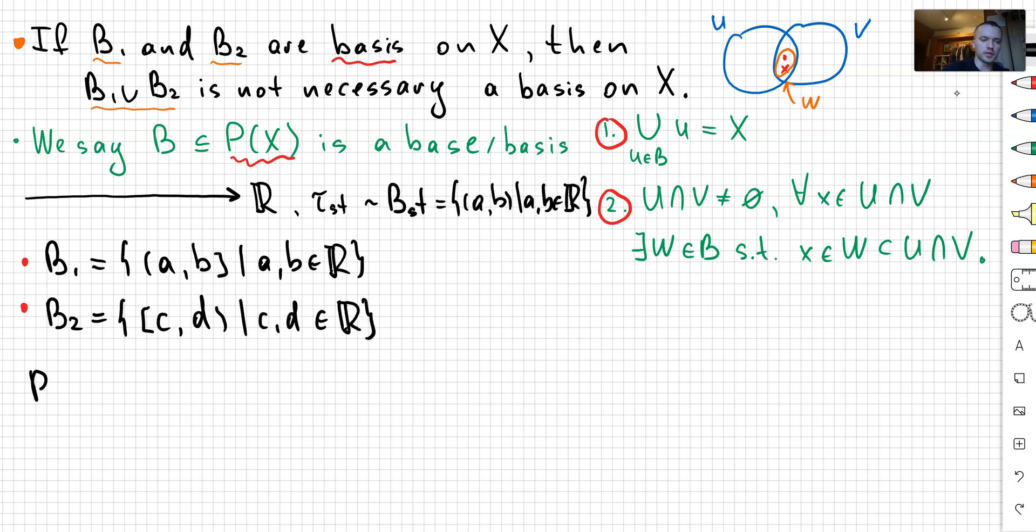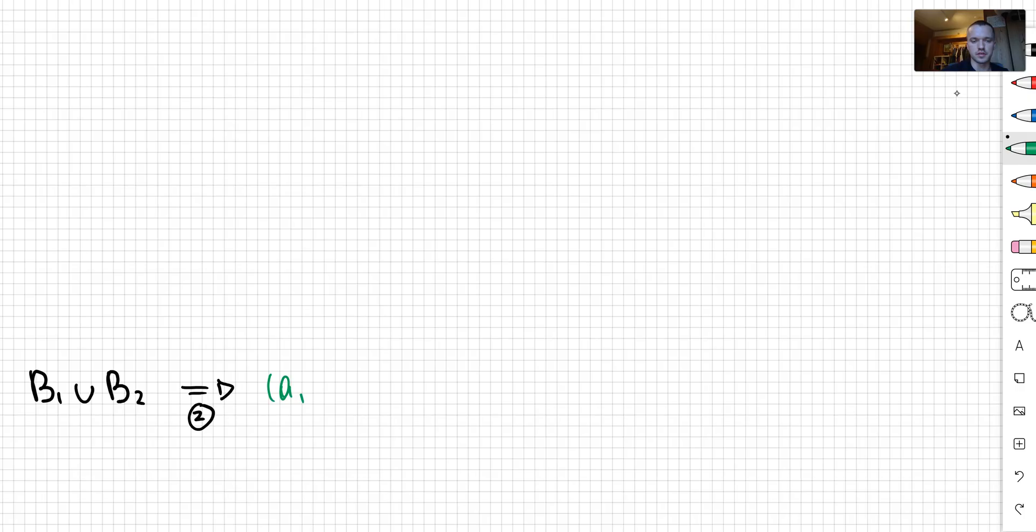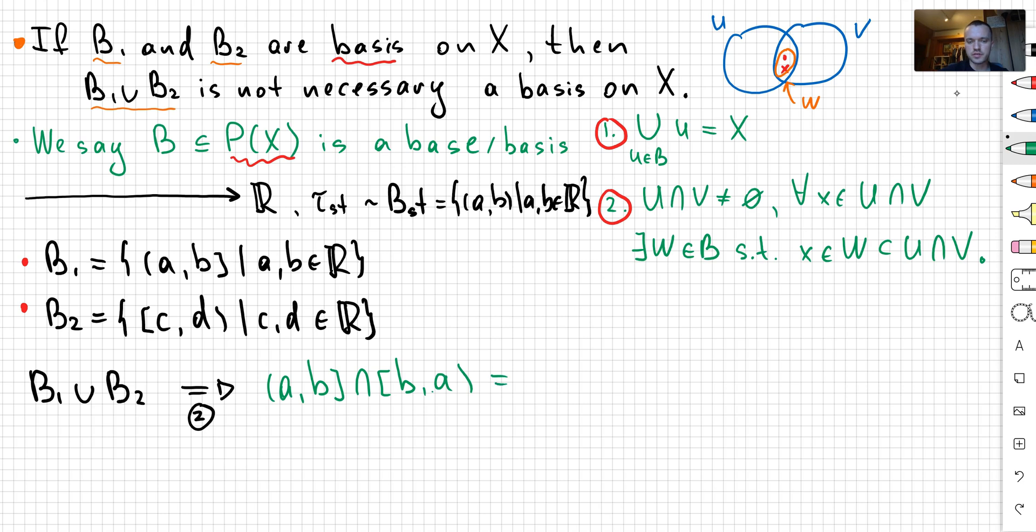So if I'm going to now take B1 union B2, let's show that second axiom, or the second property, is not satisfied. So for that, I'll consider the following intersection. I'm going to take (a, b] intersection with [b, c). So here I can see that the intersection is going to be equal to one element {b}, where the first element belongs to B1, the second element belongs to B2. So in other words, each of these elements is going to belong to B1 union B2, and we can see that the intersection is not empty.